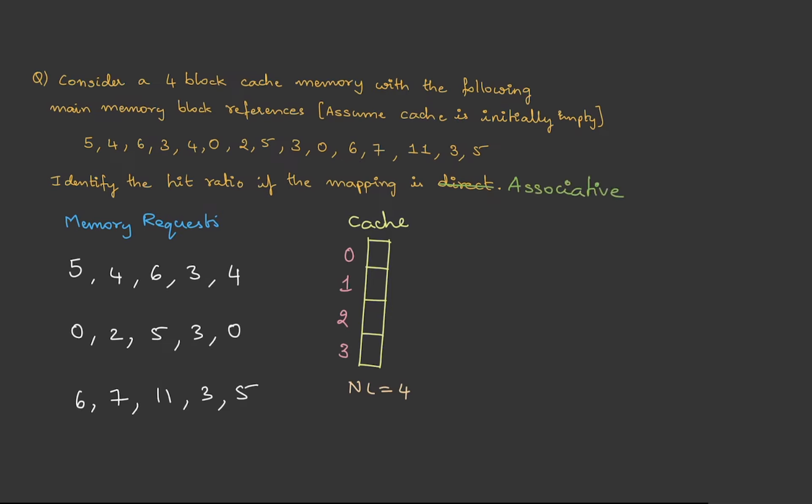What we have learned for direct mapping. In this question, let me change this. Instead of direct, it is associative, and we are using FIFO scheme. Alright. Here are the memory requests, and these are the cache lines. Now in associative mapping, there is no logic for the lines - you can place it anywhere.